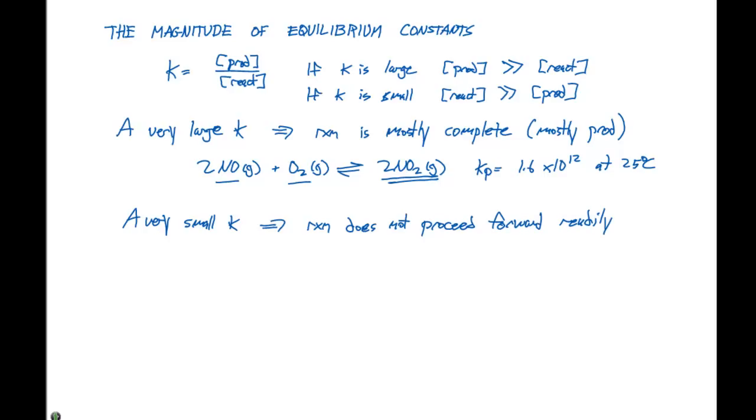And again, we're going to have mostly reactants, because the concentration of the reactants is much greater than the products at equilibrium. And the forward reaction does not occur to a significant extent.